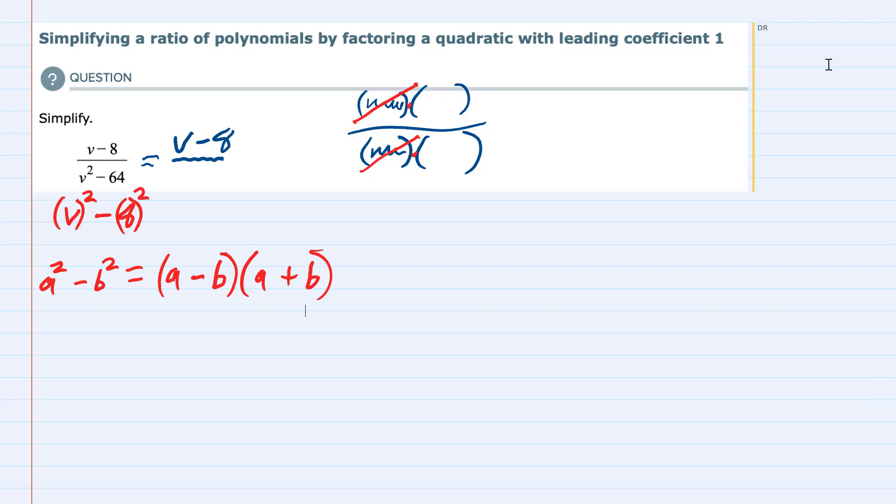So going back to our problem, we have v squared minus 8 squared that will factor into v minus 8 times v plus 8.